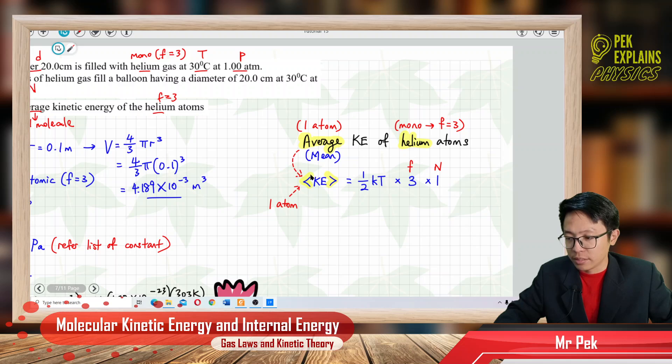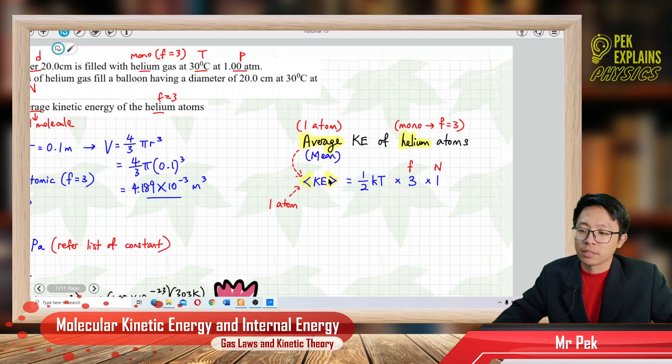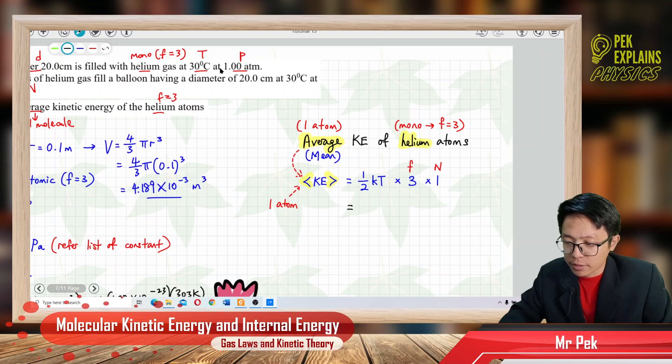What is the average kinetic energy of helium atoms? The average means one atom. Sometimes they use mean kinetic energy, also means one atom. The symbol to write average kinetic energy is this one. This symbol means average. As long as you write this symbol, average kinetic energy means this is kinetic energy for only one atom. Helium is monoatomic, so the F degree freedom is 3. We start with the energy for one degree freedom, half kt. How many degree freedom? Monoatomic, 3 degree freedom, so multiply 3. And then how many atoms? Only one atom because of average. I always multiply F and multiply N. Our F is 3, N is 1. So the formula becomes 3 over 2 kt.